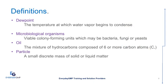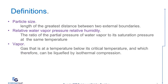Some definitions: Dew point — the temperature at which water vapor begins to condense. Microbiological organisms — viable colony forming units, which may be bacteria, fungi, or yeasts. Oil — a mixture of hydrocarbons composed of six or more carbon atoms. Particle — a small discrete mass of solid or liquid matter. Particle size — the length of the greatest distance between two external boundaries. Relative water vapor pressure (relative humidity) — the ratio of the partial pressure of water vapor to its saturation pressure at the same temperature. Vapor — a gas that is at a temperature below its critical temperature and which, therefore, can be liquefied by isothermal compression.